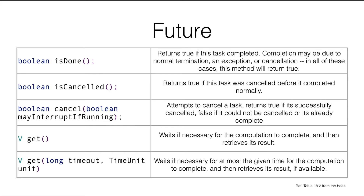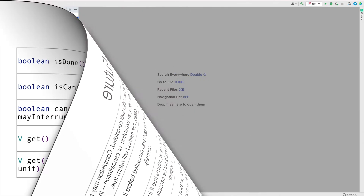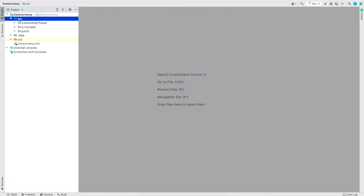The fourth method is get. This method waits for the necessary computation to complete and then retrieves the result returned from the task. It will wait until the task is complete no matter how long it takes. The fifth is another variant of get, where we can give a timeout — if the task finishes within the provided time period the result is returned, but if not, it returns back without getting the result.